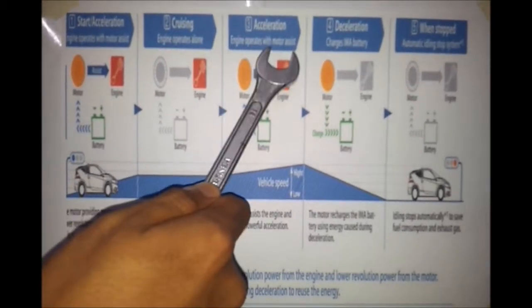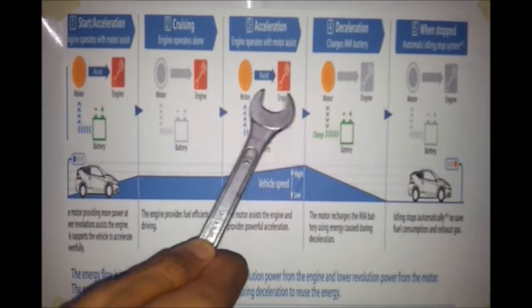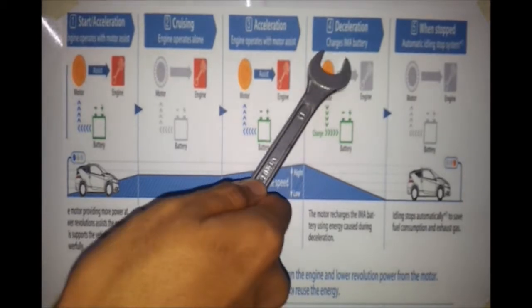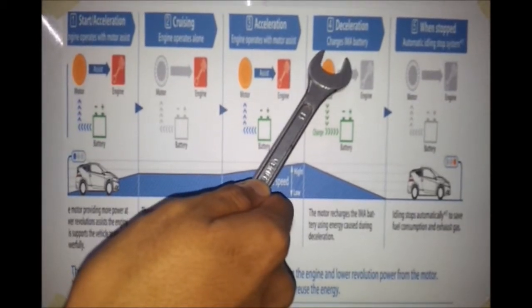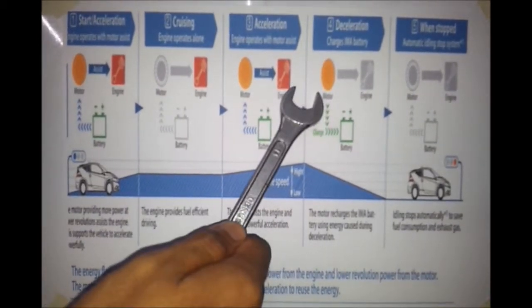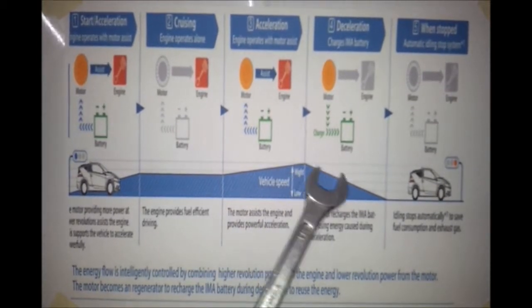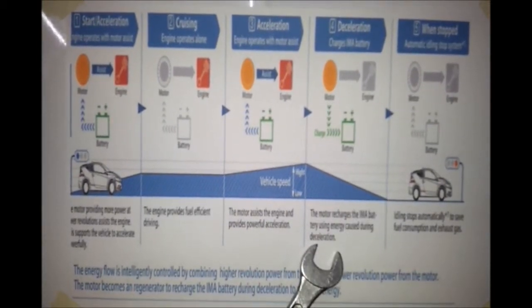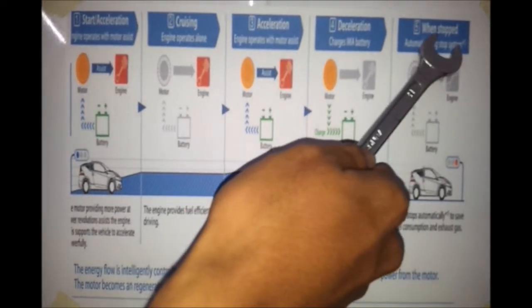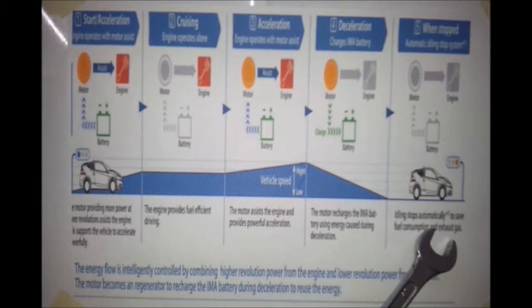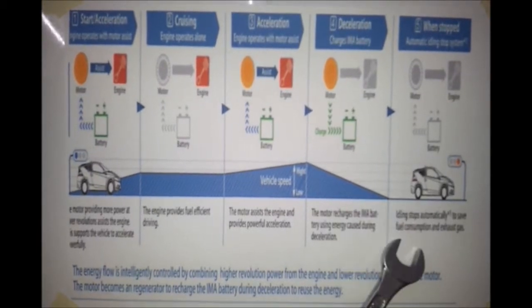When the vehicle is braking, regeneration will happen. The motor will recharge the IMA battery using energy captured during this deceleration. When the vehicle stops, the engine will shut off and idle stops automatically to save fuel consumption and exhaust gas.